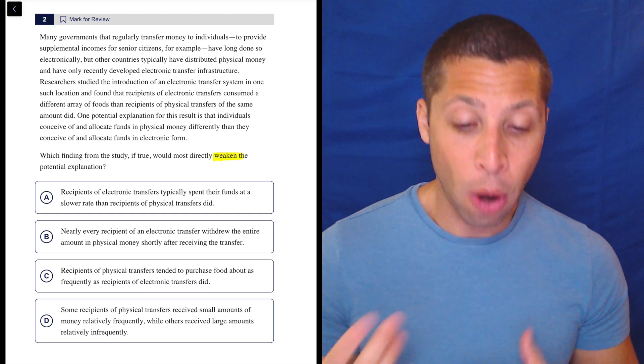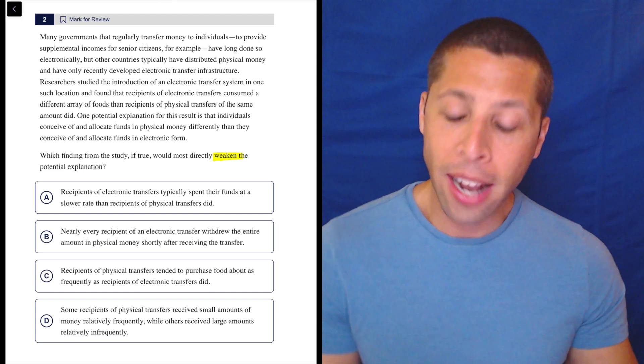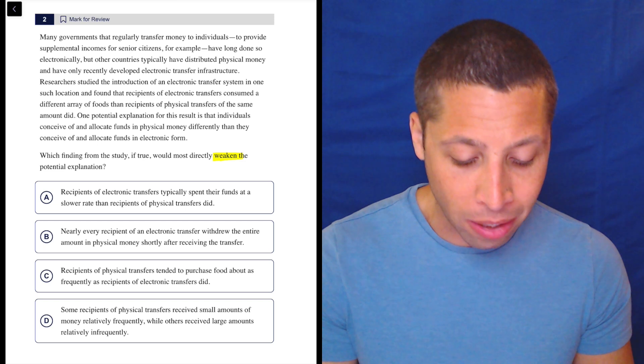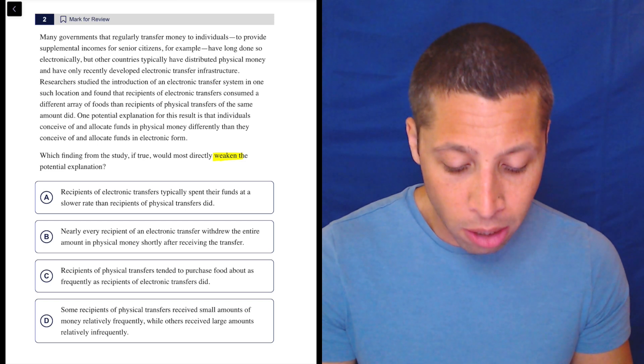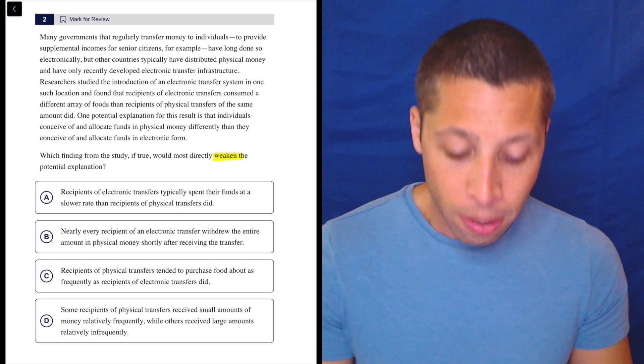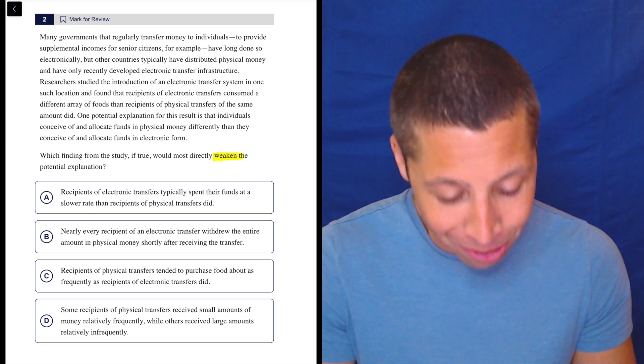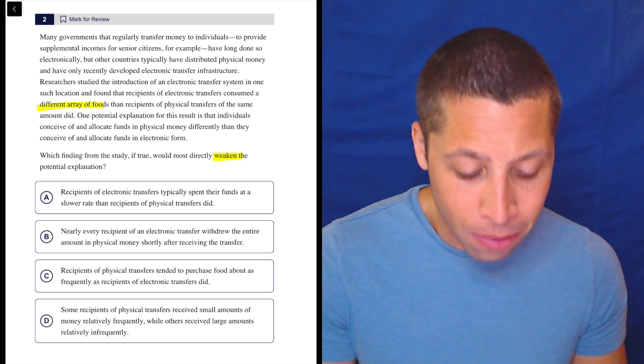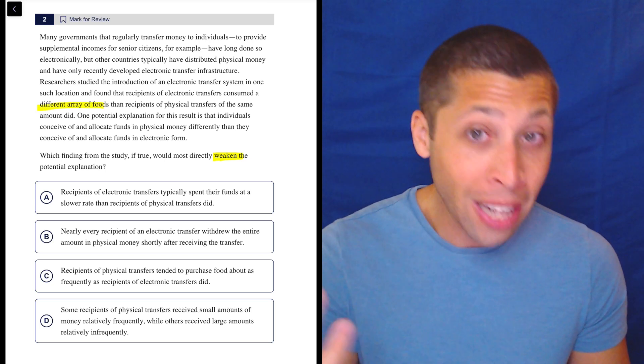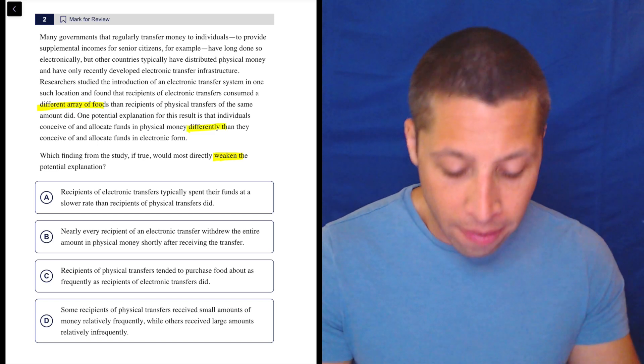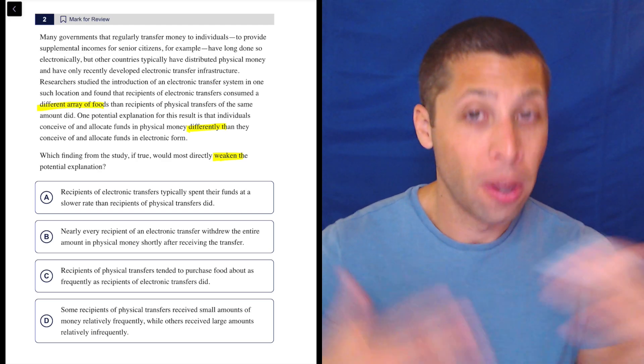Now, as I read the passage, I am hopefully going to start to pay most attention when I get to the explanation, but any strong words that come out, I'm going to pay attention to them as well. Many governments that regularly transfer money to individuals to provide supplemental incomes for senior citizens, for example, have long done so electronically, but other countries typically have distributed physical money and have only recently developed electronic transfer infrastructure. Researchers studied the introduction of an electronic transfer system in one such location and found that recipients of electronic transfers consumed a different array of foods than recipients of physical transfers of the same amount did. So that's a strong word. What did they do differently? They bought different foods. One potential explanation for this result, so here's the explanation, is that individuals conceive of and allocate funds in physical money differently than they conceive of and allocate funds in electronic form.